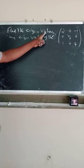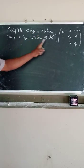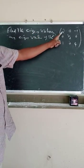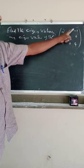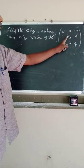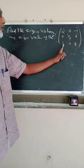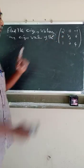Find the eigenvalues and eigenvectors of the matrix: 2, 0, minus 1, 0, 1/2, 0, 1, 0, 4.